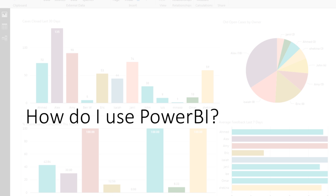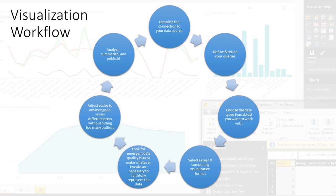Once you have it, how do you use it? This workflow applies to visualization in general, regardless of whether you use Power BI, Tableau, or Microsoft Excel. The first step is to connect to your data — get it from somewhere, define and refine exactly how you're fetching it, and hone in on the pieces you want. If you're blindly pulling everything from a big dataset, that can take a long time. You then want to get more specific and choose which variables you want to work with.